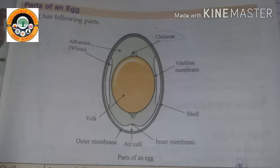Next we look at inner and outer membranes. Lying between the egg shell and the egg, there are two transparent protein membranes that provide efficient defense against bacterial invasion. Yeh inner and outer membranes egg shell aur egg ke beech mein hoti hain, aur transparent hoti hain. Protein membranes eggs ki suraksha karte hain aur bacteria se bachate hain. They are made partly of keratin, a protein that is also found in human hair.